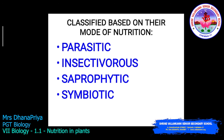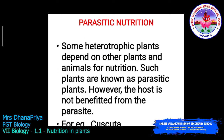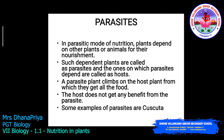In parasitic nutrition, some heterotrophic plants depend on other plants and animals for nutrition; such plants are known as parasitic plants. The host is not benefited from the parasite. The parasite plant climbs on the host plant from which it gets all the food, while the host does not get any benefit from the parasite. An example of a parasitic plant is Cuscuta. Here, only the parasite gets the benefit, not the host.